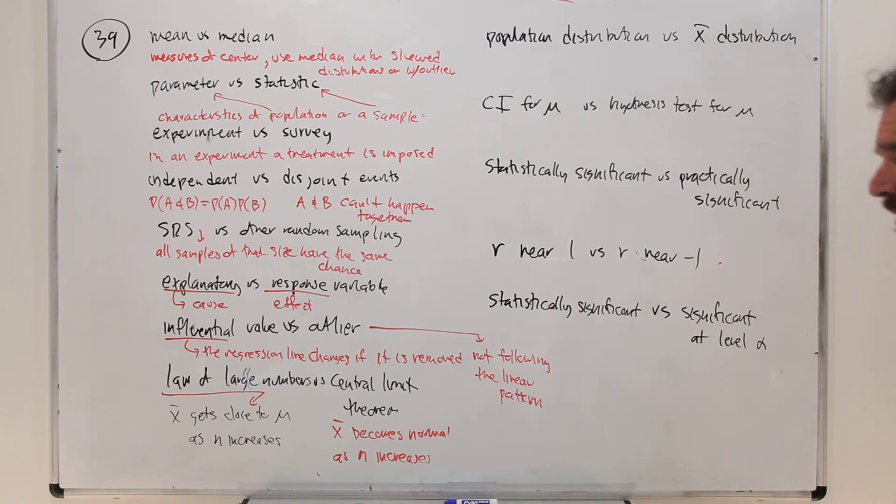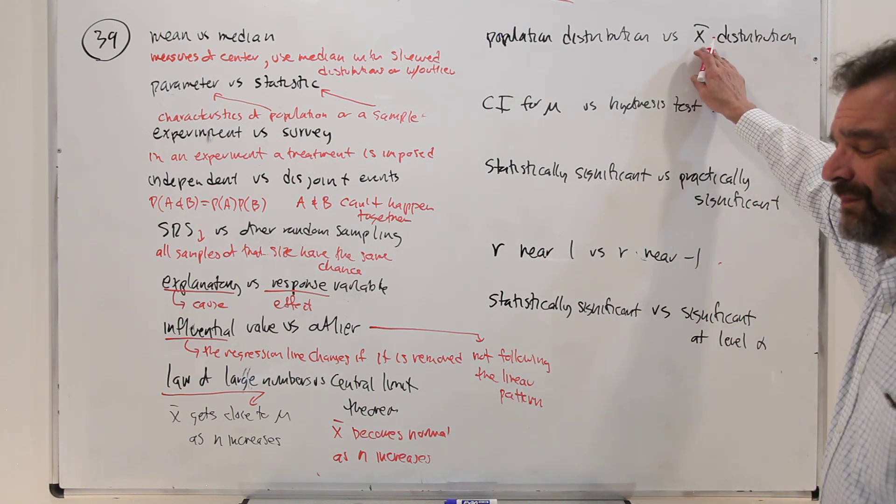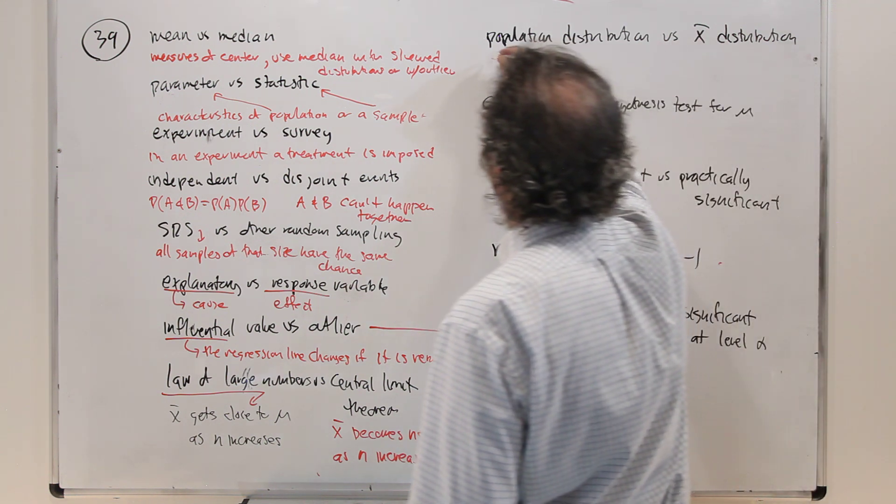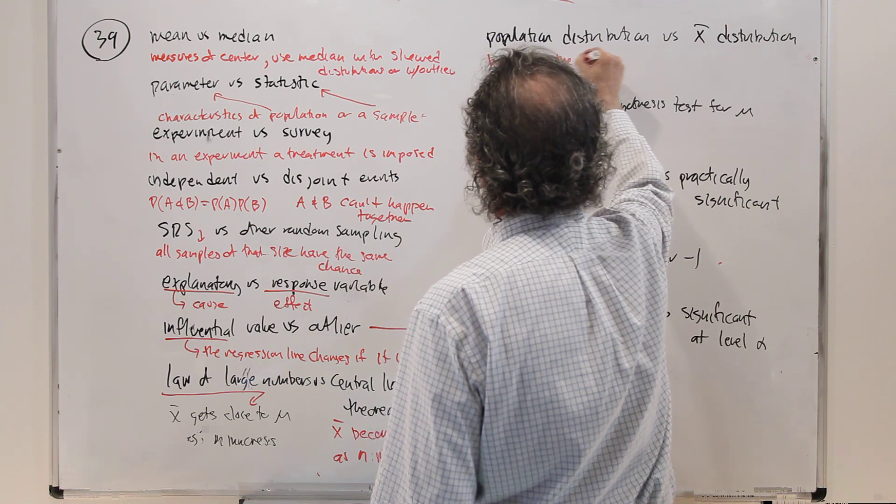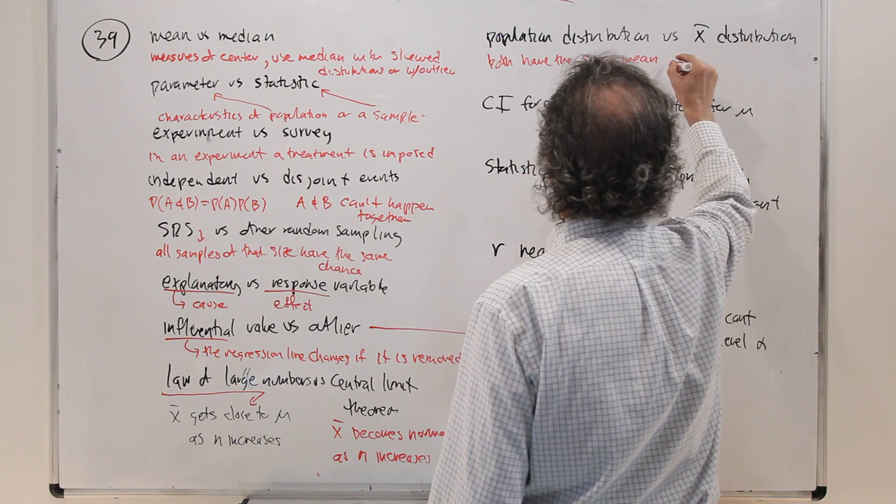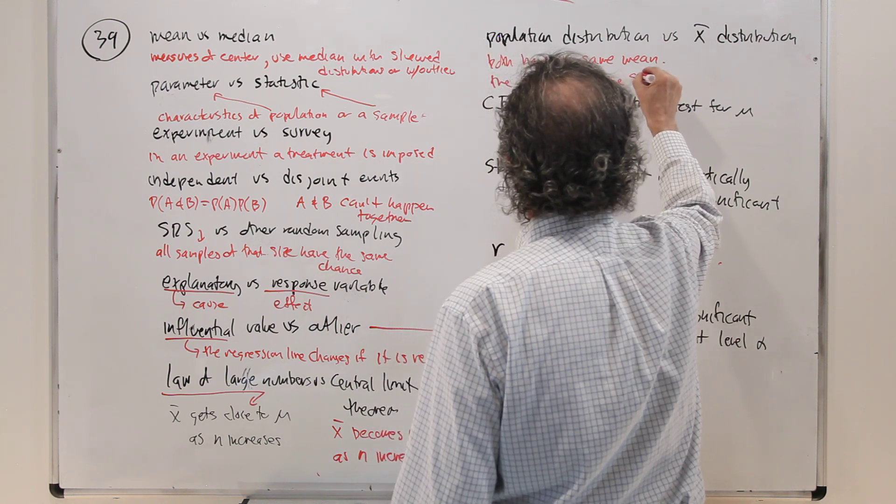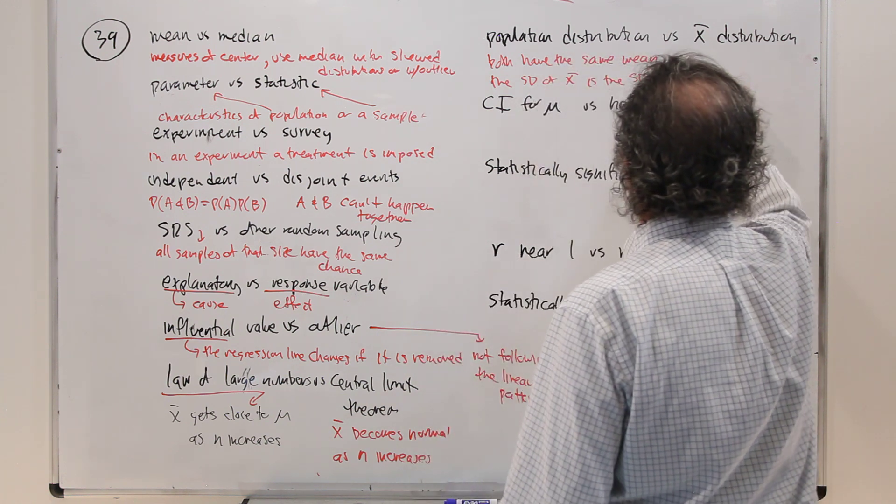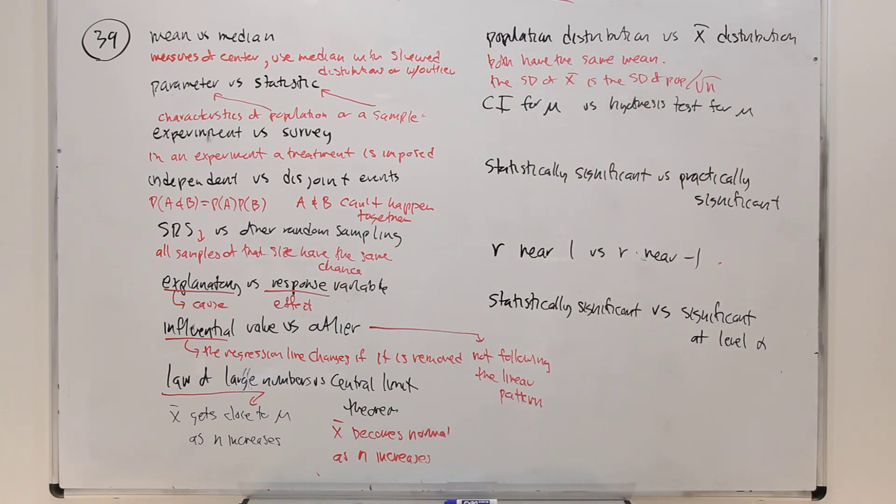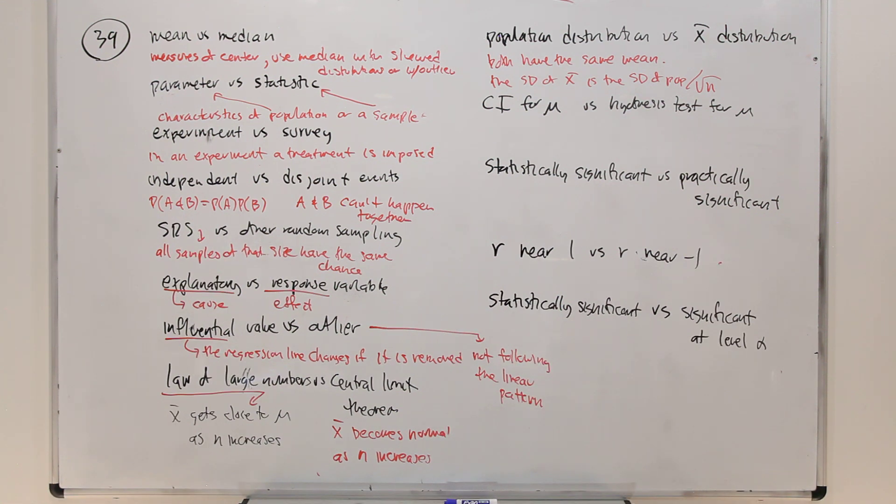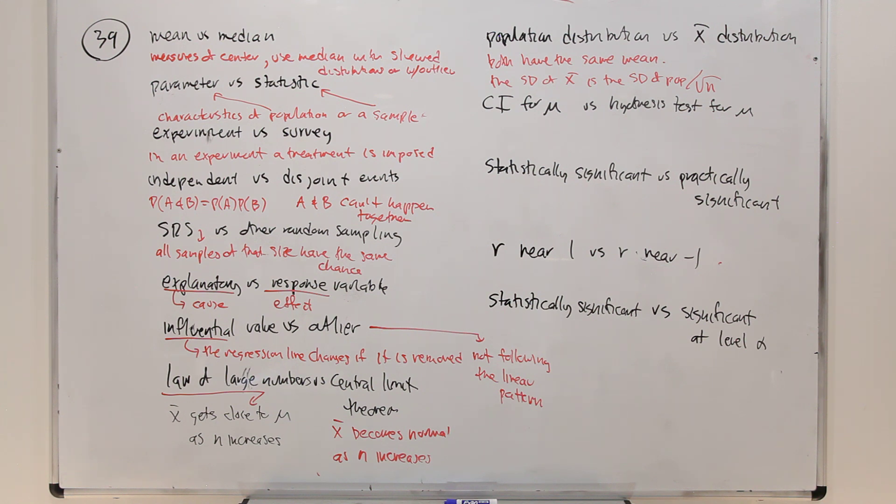Population distribution versus x bar's distribution. Well, this would be the sampling distribution of the sample mean. Maybe we'd say both have the same mean. The standard deviation of x bar is the standard deviation of the population divided by root n. So they differ in, they are similar in that they have the same mean. They're different in that they have different standard deviations. If the population is normal, x bar has a normal distribution. Otherwise, if the population is not normal, x bar has a different distribution tending towards the normal distribution and tends more and more towards the normal distribution as the sample size grows larger.